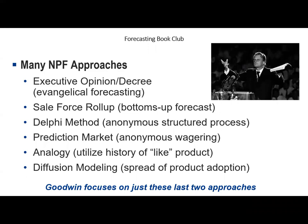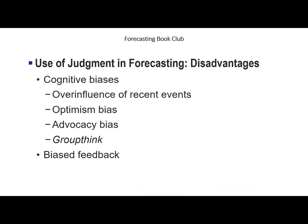Finally, there's forecasting by analogy — expecting new product sales to mirror similar past products — and diffusion modeling, which looks at how ownership of new products spreads through populations. Chapter 10 discusses these last two approaches, but first Paul gives a warning about the use of pure unstructured judgment in new product forecasting.